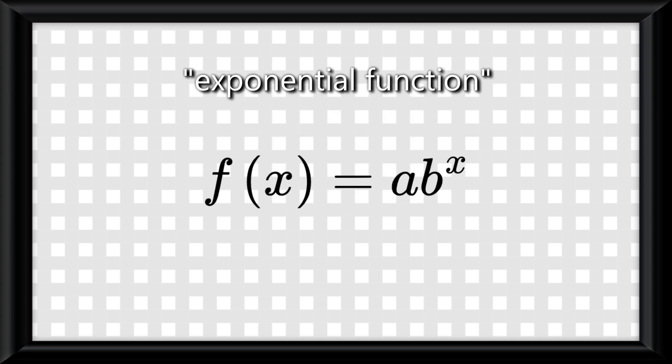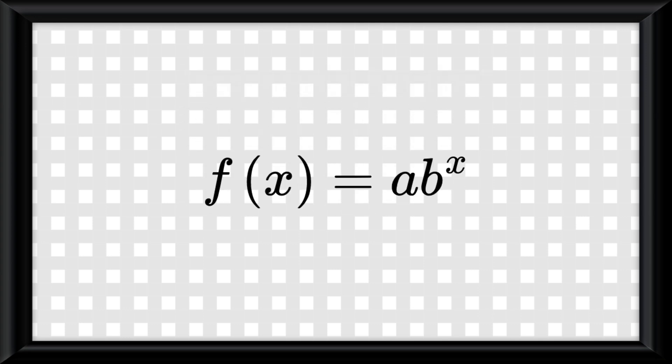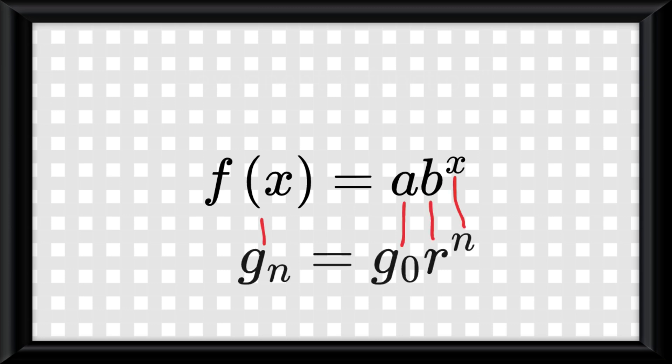Geometric sequences embody a new type of function we'll be talking about this unit: exponential functions. The exponential function skeleton equation is f of x equals a times b to the power of x, and you can see the similarity to the geometric sequence equation.